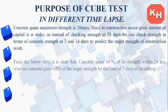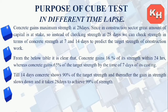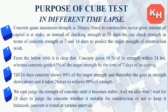From the table it is clear that concrete gains 16% of its strength within 24 hours, whereas 65% of target strength is achieved by the 7th day of casting. Till 14 days, concrete shows 90% of the target strength, and thereafter the strength gain slows down, taking 28 days to achieve 99% strength. We can judge the strength of concrete at various intervals rather than waiting 28 days, so concrete is tested at various intervals.